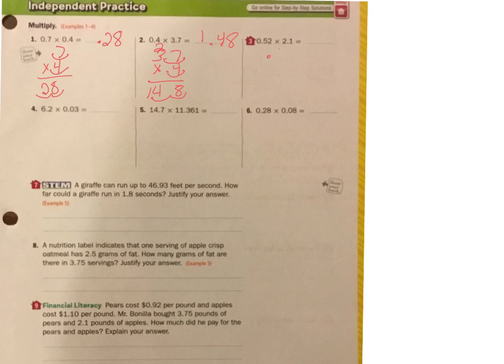Alright, this next one, 0.52 times 2.1. 1 times 2 is 2, 1 times 5 is 5, go to the next level, add my 0, 2 times 2 is 4, and 2 times 5 is 10. When I add those up, I get 2, 9, 1, and 0, 1, okay. Then I gotta go 1, 2, 3, 3 out to go 3 in, 1, 2, 3. So my answer is 1.092, and hopefully you got that same thing. If you didn't, come see me, love to help you.